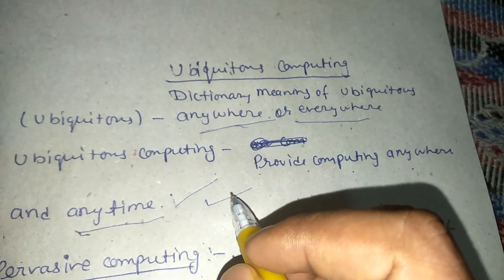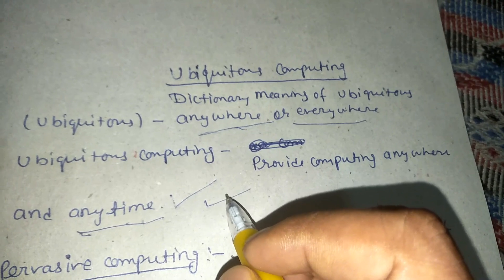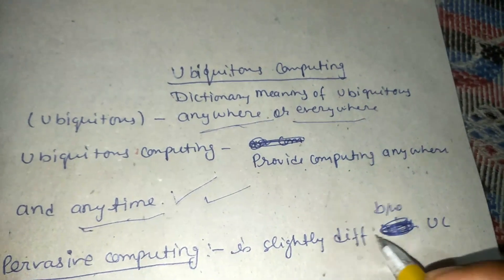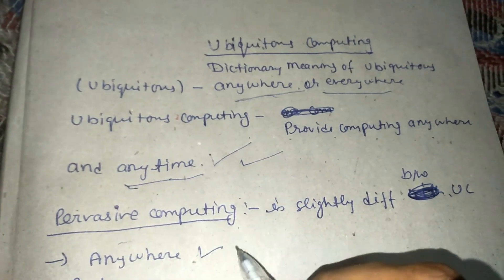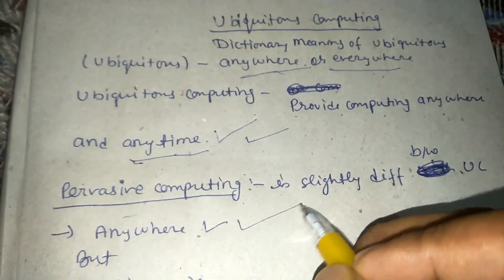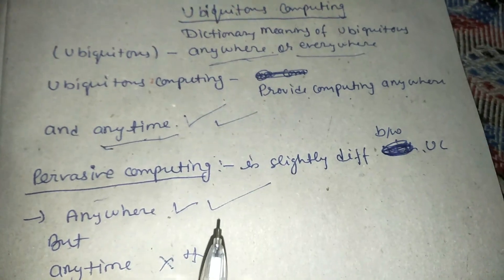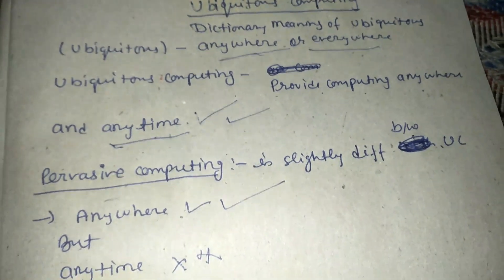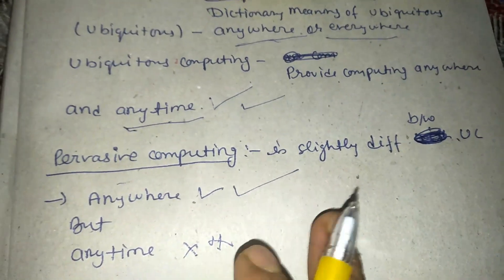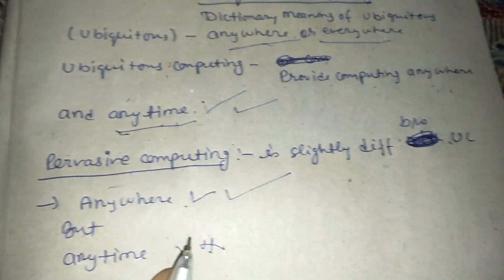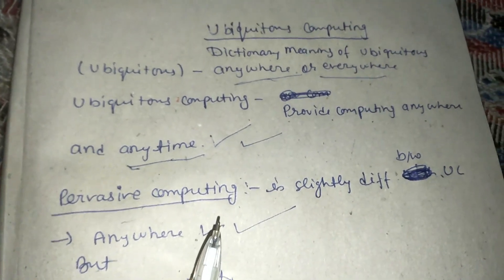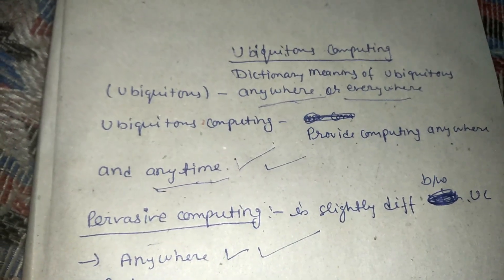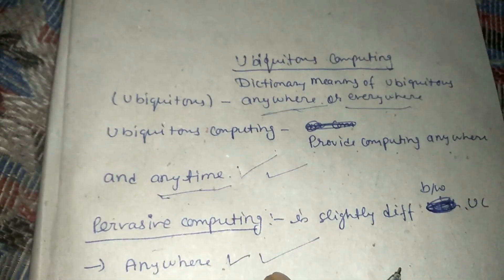Pervasive computing is slightly different from ubiquitous computing. It provides computing anywhere, but not anytime — only at a particular time. So the key difference is anytime versus not anytime. I will discuss more about ubiquitous computing in the next video.